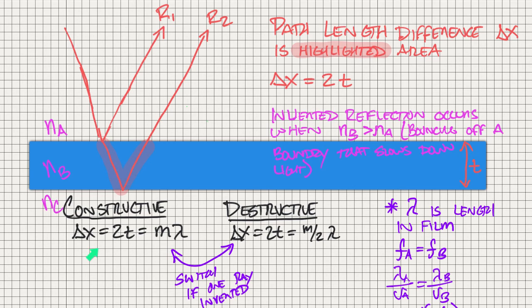So again, some things that we need to pay attention to: How are things constructive and destructive? Constructive would be exactly an integer of wavelengths, whereas destructive would be a half wavelength integer.